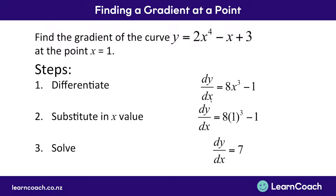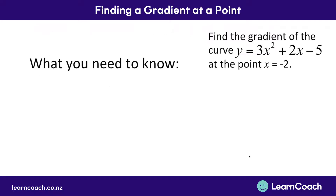Multiply that by 8 gives 8, and take 1 away gives us 7. So our gradient, when we've differentiated it at x equals 1, is 7. And that's how you find your answer. Just to revise this process, the first step is differentiating.